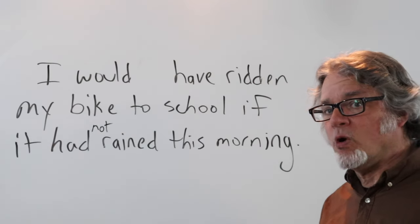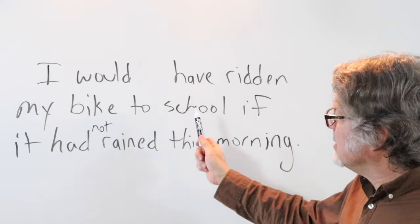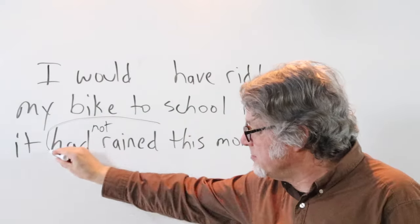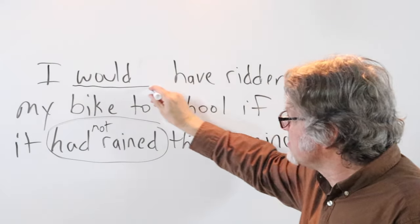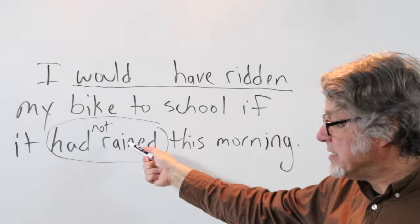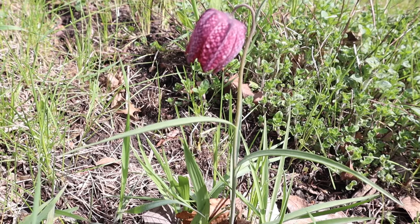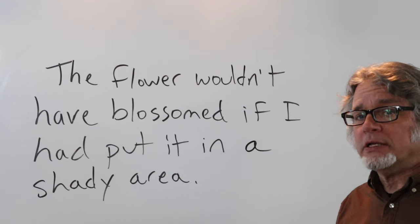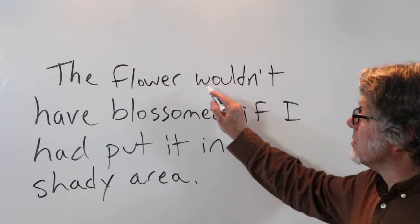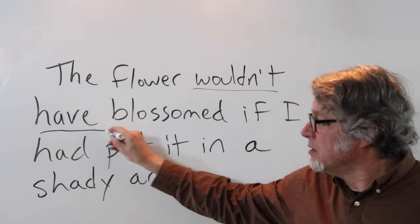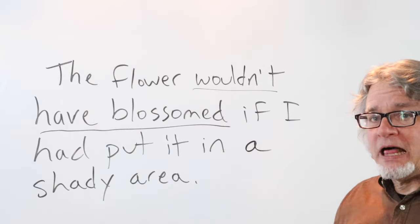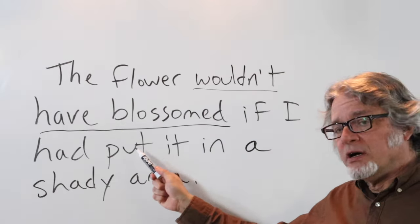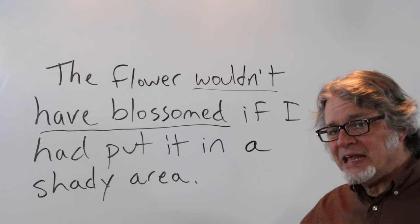If it had not, or hadn't, rained this morning — in this case it did rain. This indicates that it did rain after 'if,' and this did not happen because of this, because it rained. The flower wouldn't have blossomed if I had put it in a shady area. So this did happen — the flower did blossom, it did become a flower — and the reason is because I put it in a good area that was not too shady.